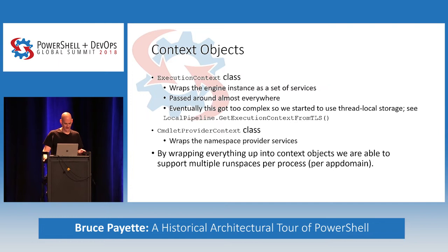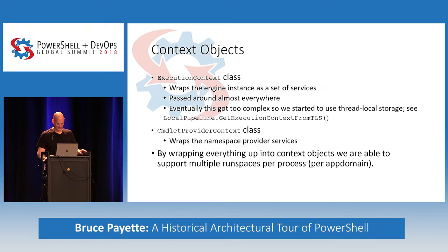Command provider context did the same thing for providers. By wrapping everything into context objects, this gave us the ability to do multiple runspaces per process or per app domain. This means we can do parallel execution, runspace pools, all those things. It's sort of just something we did because it seemed obvious rather than being a deliberate architectural decision.